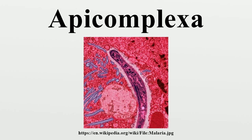Bloodborne genera within the Apicomplexa comprise three suborders of parasites: suborder Adelorina with eight genera, suborder Haemospororina with all genera in this suborder, and suborder Eimeriorina with two genera. Within the Adelorina are species that infect invertebrates and others that infect vertebrates. The Eimeriorina, the largest suborder in this phylum, has a life cycle involving both sexual and asexual stages. The asexual stage is reproduced by schizogony. The male gametocyte produces a large number of gametes and the zygote gives rise to an oocyst, which is the infective stage. The majority are monoxenous but a few are heteroxenous.